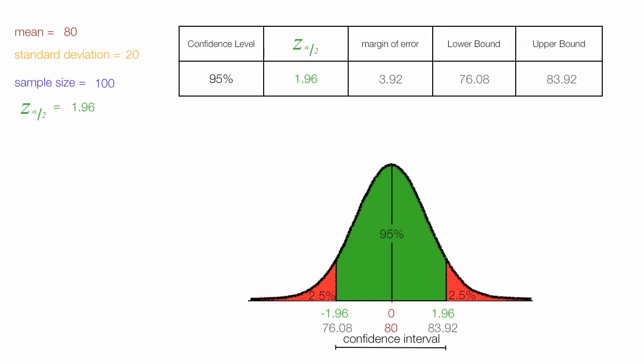So we conclude, you are 95% confident. The population mean is between 76.08 and 83.92.